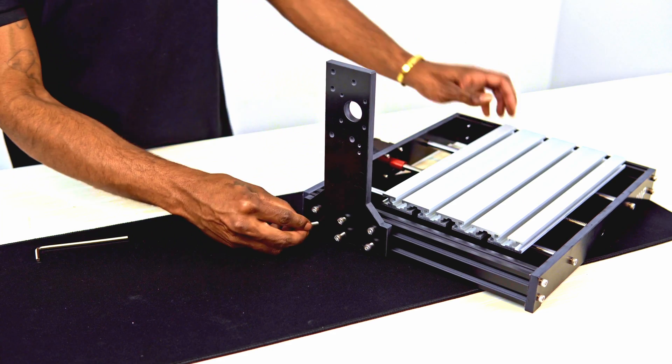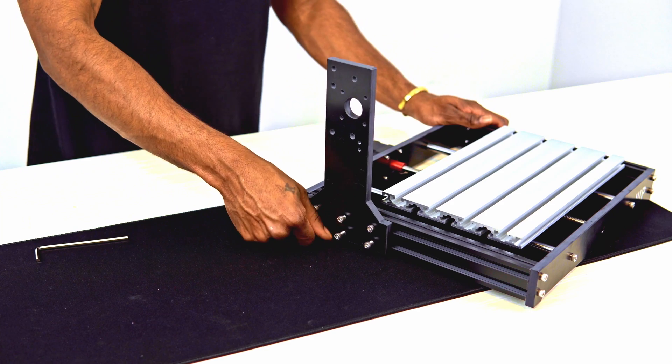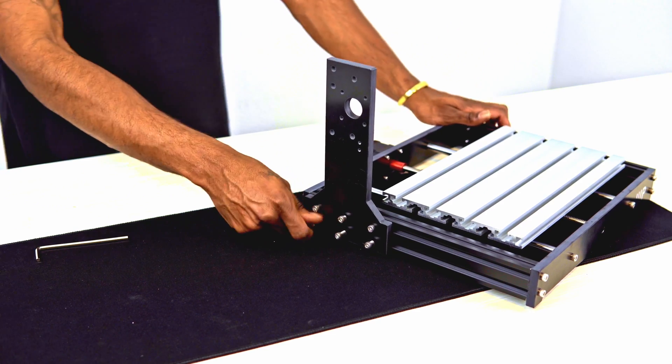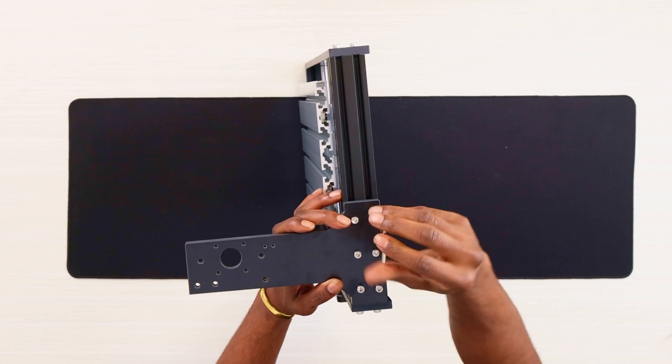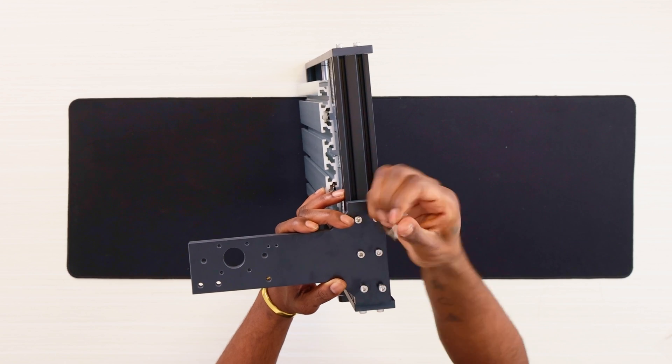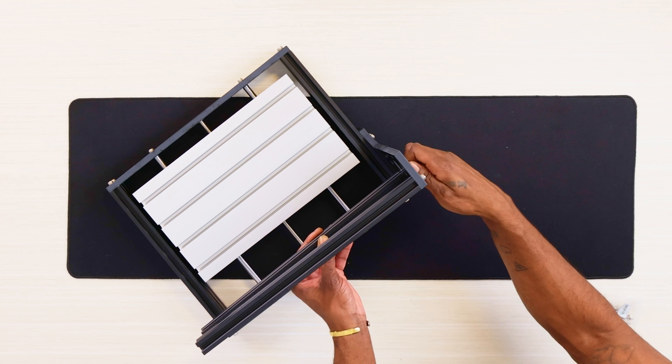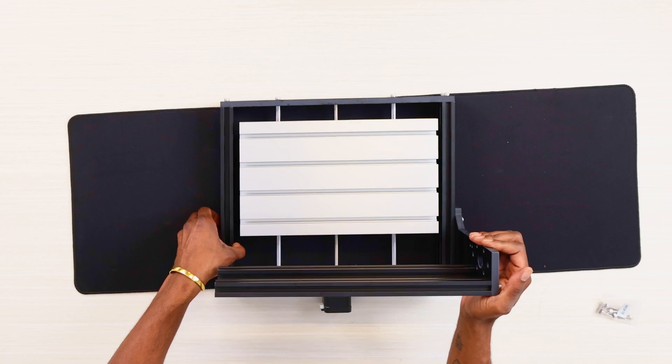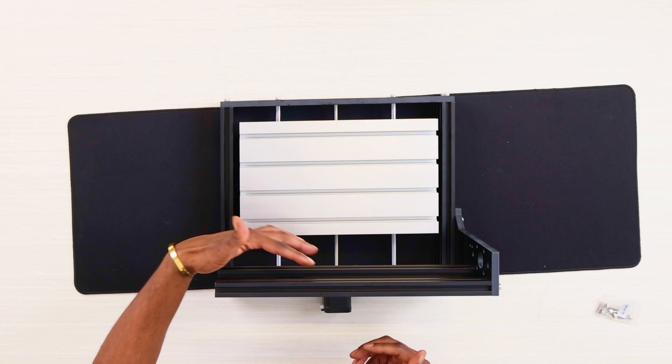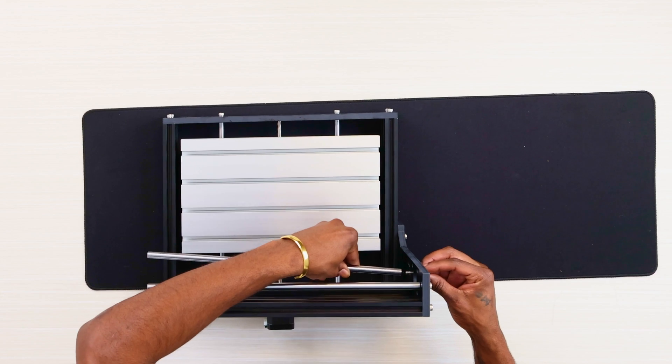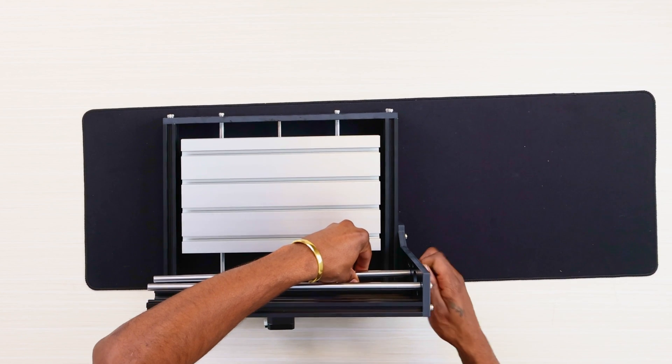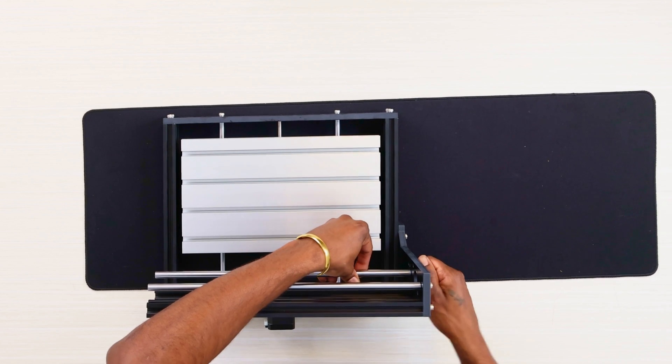Now let's attach the left plate to the left side of the base using six M5 by 25 screws. Note the left plate contains the mount for the motor module. Here we can now attach the two profiles to the left plate using two M5 by 16 screws. Note the two threaded screw holes on the profiles are positioned away from the left plate. After that, let's attach the guide rods to the left plate using two M5 by 16 screws.